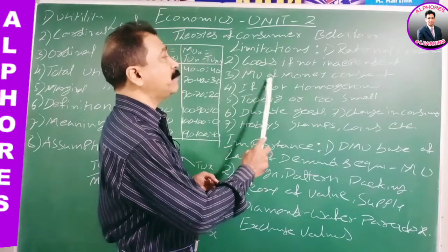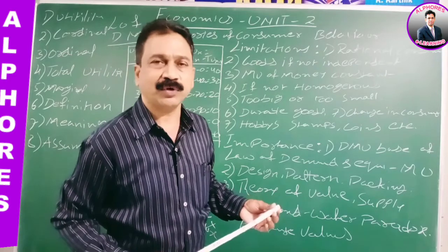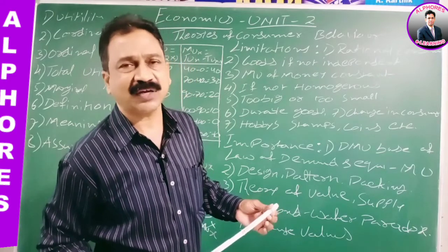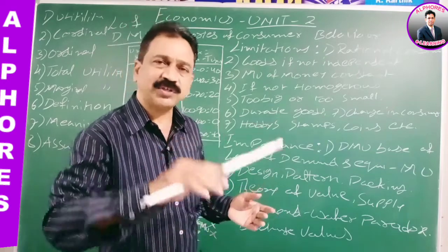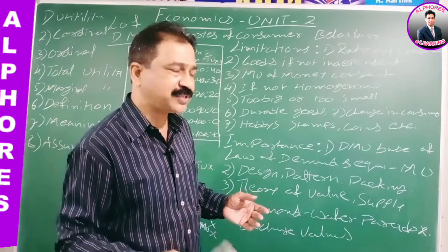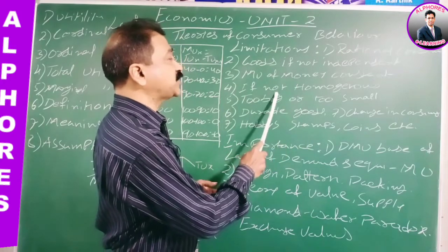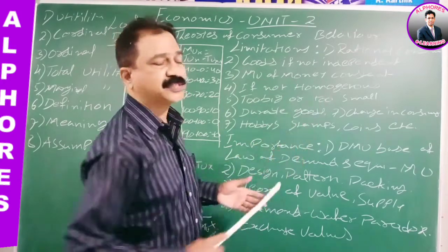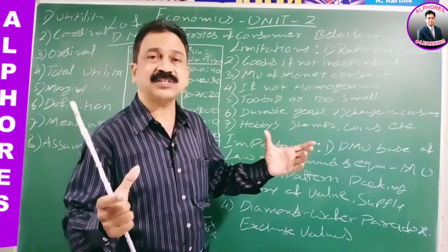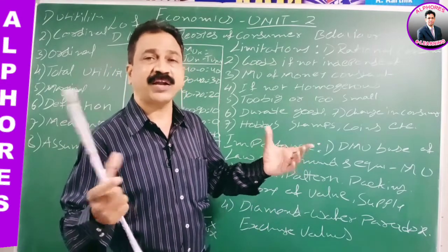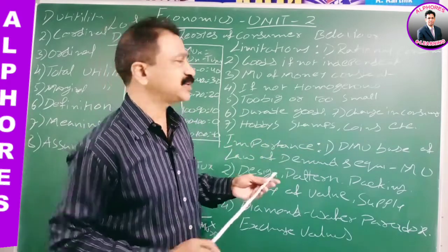Third limitation: marginal utility of money is constant, which is a little bit doubtful. Marginal utility of money is not really constant — it also changes, but that is one of the assumptions. Next: if the commodities are not homogeneous. If the commodities are homogeneous then only this law is applicable. If they are heterogeneous — if they are different from one to another — then this law is not applicable.